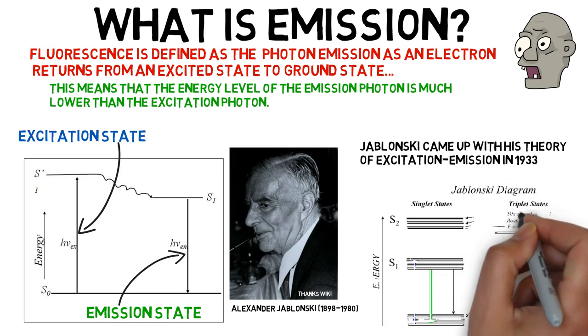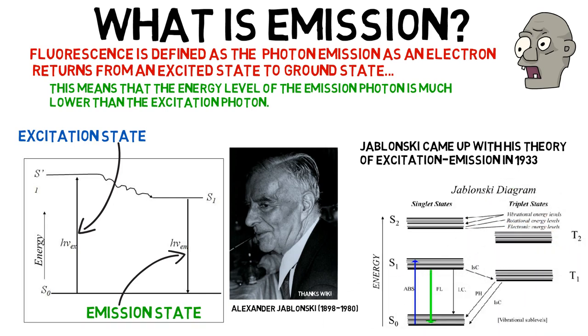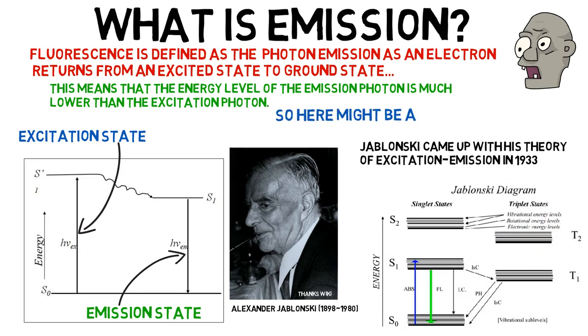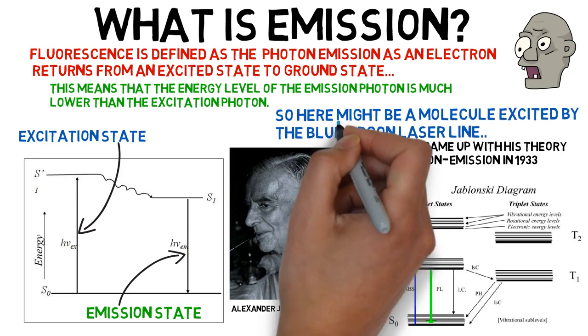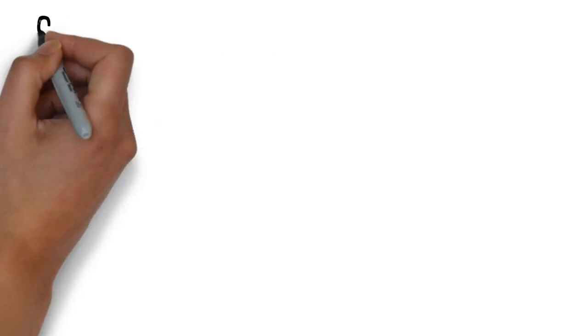Here's another way of looking at Jablonski's diagram, but the result is just the same. Whatever the wavelength of the excited molecule is, the emission will be lower in energy and higher in wavelength. There are lots of other ways for molecules to lose energy, but for the moment, we'll just focus on fluorescence.